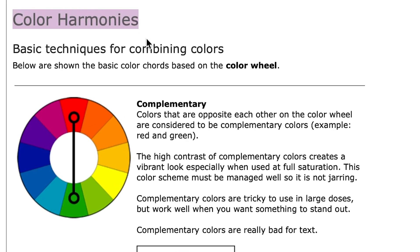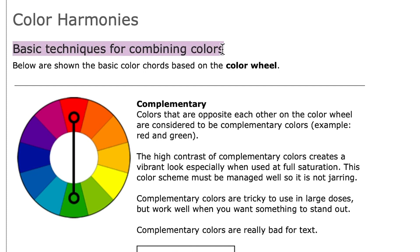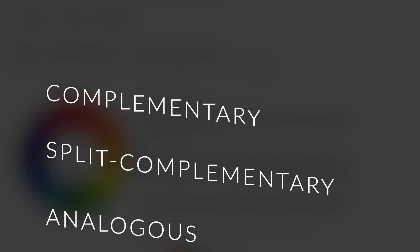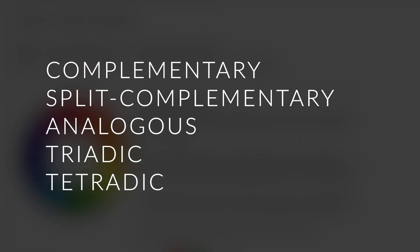If you're already familiar with color harmonies, this feature will make a lot of sense as it basically simplifies choosing between different color chords. So we have Complementary, Split Complementary, Analogous, Triadic, and Tetradic.